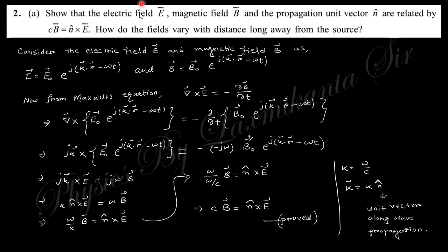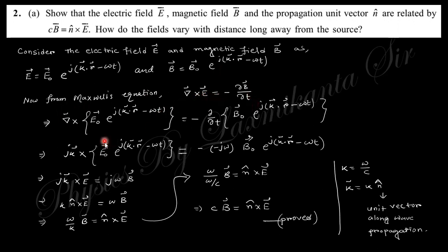Question two says: show that the electric field vector E, magnetic field vector B, and propagation unit vector n̂ are related by cB = n̂ × E. How do these fields vary with distance from the source? If we consider the electric and magnetic field vectors in their standard form, from Maxwell's equation curl of E equals minus ∂B/∂t, substituting these field vectors gives this relation.